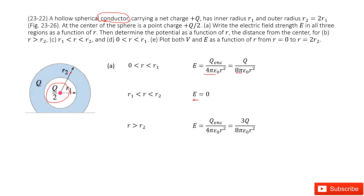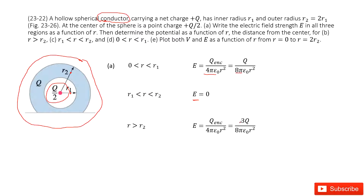When R is larger than R2, we draw a Gaussian surface again. The enclosed charge becomes Q over 2 plus Q, which is 3Q over 2. Inputting 3Q over 2 as the enclosed charge, you get a function that looks like this one.